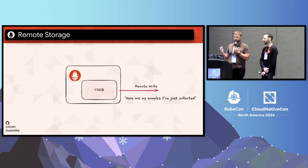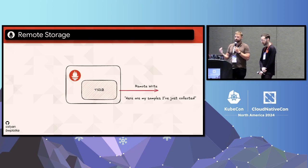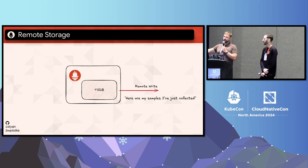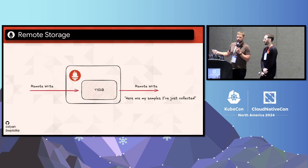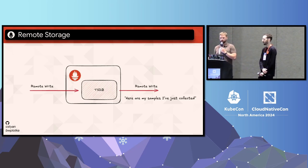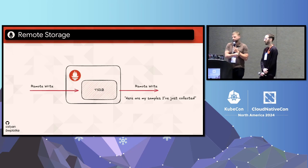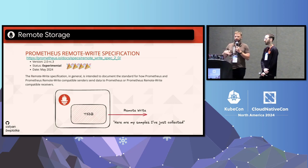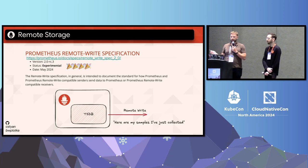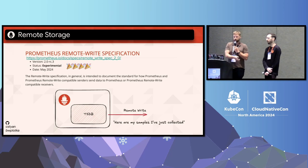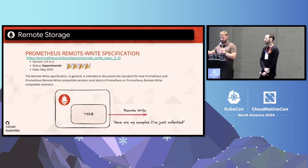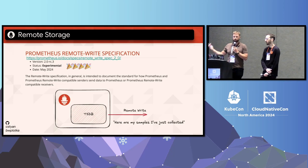The most nowadays-used remote integration is the remote write protocol. It allows any client to send metric samples in Prometheus format from one place to another — typically live-streaming fresh metrics to centralized long-term storage. Prometheus also supports receiving the same protocol, so you can import any metrics from other places into Prometheus. In May this year, the Prometheus team released a new experimental version called 2.0, which Callum and I had the pleasure to co-author. In this talk, I'd like you to understand why remote write 2 exists, what it enables, how we improved efficiency despite adding more features, and how you can use it in production right now.